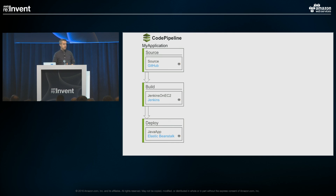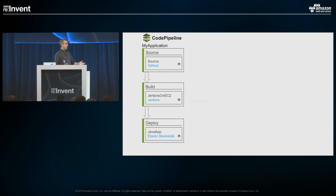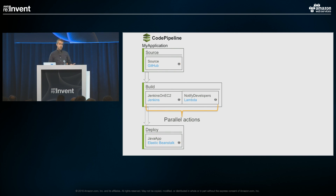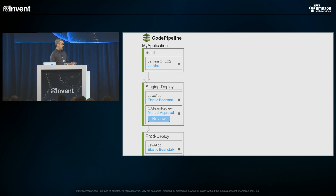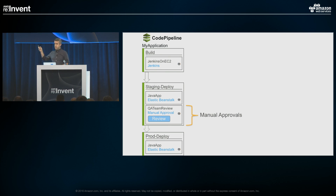A pipeline is made up of stages. Stages are made up of actions. Stages are connected via transitions. We give you the ability to do parallel actions inside of a stage — these happen at the same time — and also sequential actions inside of a stage. You can have many stages, many actions, a lot of parallelization and sequential actions. One feature we launched last summer is manual approvals — you can message out via SNS to an email address, a Lambda function, a text message, or pretty much anything you can plug into Simple Notification Service.